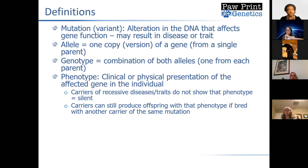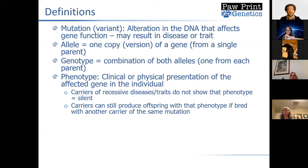There can be situations where dogs can be what we call asymptomatic carriers. This is true in recessive diseases or traits where they inherit one copy of the mutation from one parent, but that is not enough to actually give them the trait or disease. They may not show that actual phenotype, but they could still produce dogs with that trait or disease if bred with a dog that also has that same mutation.